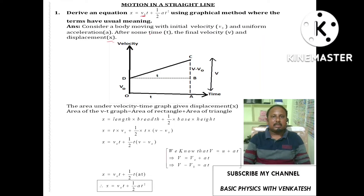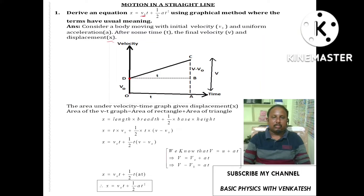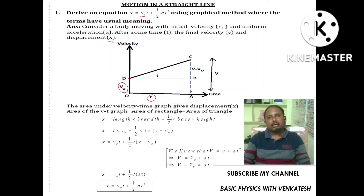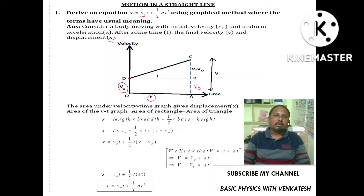For uniform acceleration, the velocity-time graph should be a straight line. Since the initial velocity is not zero, it does not start from the origin O, but from the point corresponding to v-naught. It reaches the final velocity v after some time t. The distance on the velocity axis between v and v-naught is v minus v-naught.